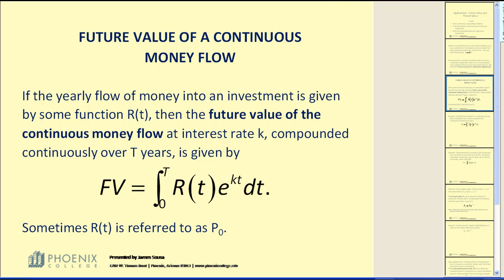If the yearly flow of money into an investment is given by some function R of T, then the future value of the continuous money flow at interest rate K compounded continuously over T years is given by this definite integral. Remember, R of T is the money flow per year. Occasionally, R of T will be referred to as P sub zero or P not.